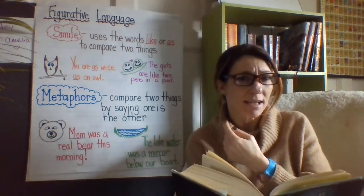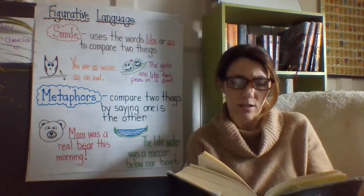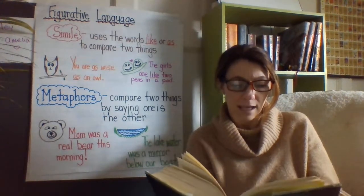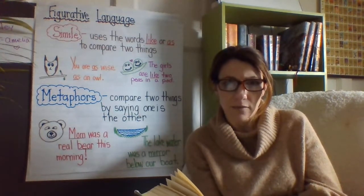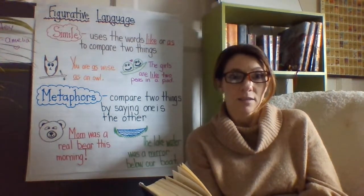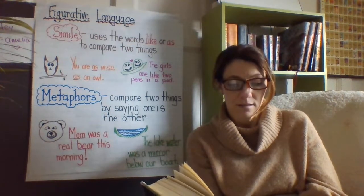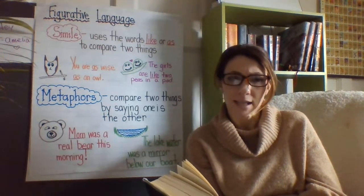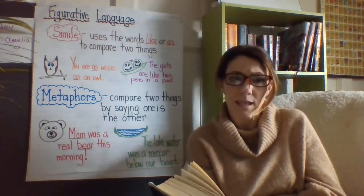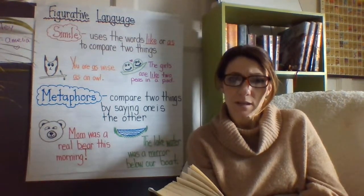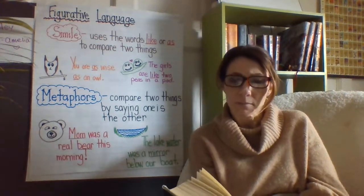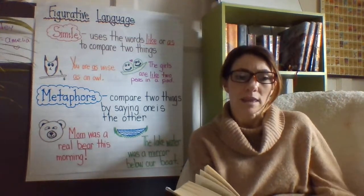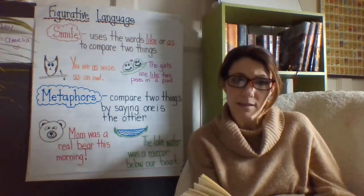Elephant hide isn't like your skin and my skin — it's really thick and strong. But a claw stick can pierce it like a leaf. A leaf is delicate. That means a claw stick can hurt even that tough skin as if it were going through a thin, brittle leaf. See how the author uses similes to put a picture in our mind of what that claw stick must be like for Stella?